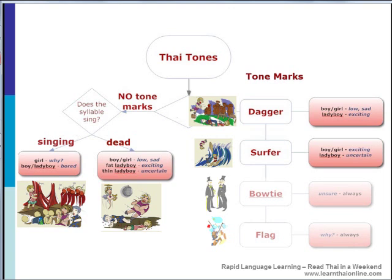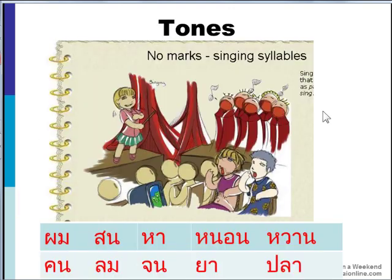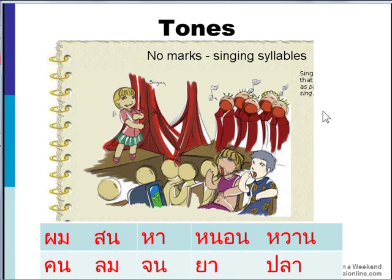Basically, what you have to do is look at a word or syllable and decide which scenario it fits into. If the syllable has no tone mark, then you decide whether it's singing or dead. If it has a tone mark, then you consider the scenario for each tone mark. The first scenario is when the syllable sings in some way — if you can continue or sing or hum the sound. And for this, you must look at the final sound. In English, the word sing is a singing word because you can continue the final sound, same for words like run, hum, or far.